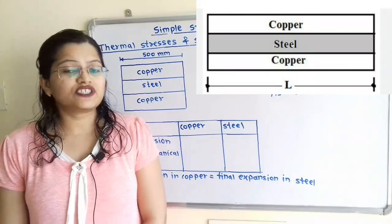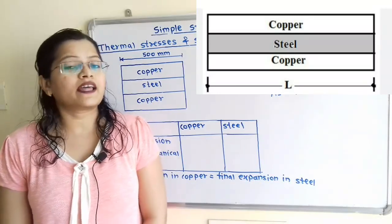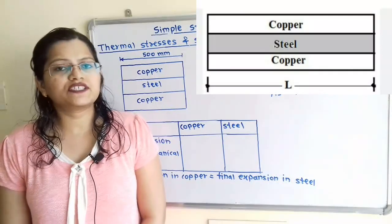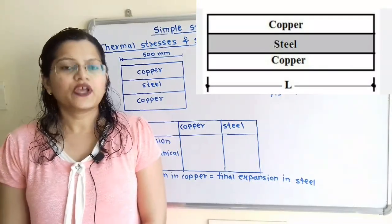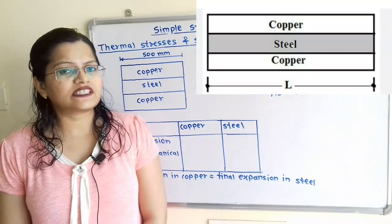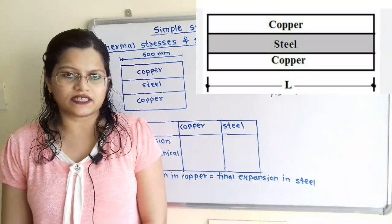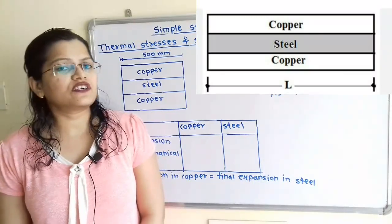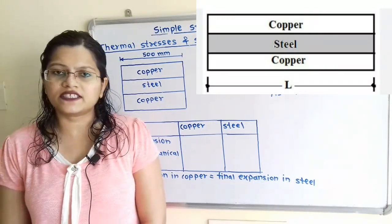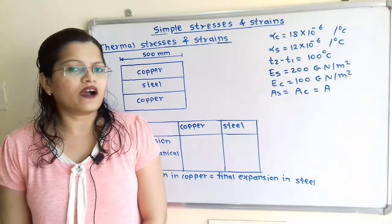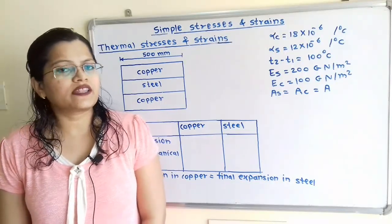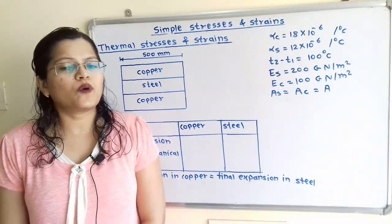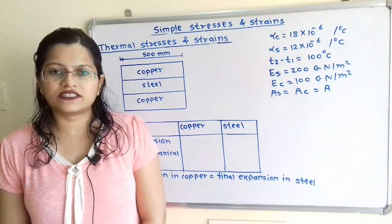In this question, two copper bars and one steel bar are rigidly connected at their ends and the temperature is increased by 100 degrees Celsius. We have to find out the stresses developed in copper as well as steel. If we observe the coefficient of linear expansion, the value of alpha for copper is more than the value of alpha for steel. So we have to show more extension for the copper bar than the steel.